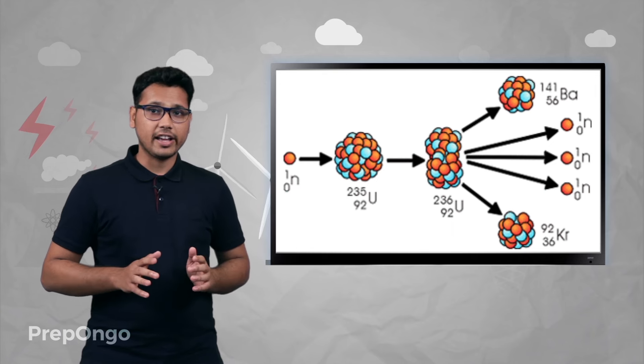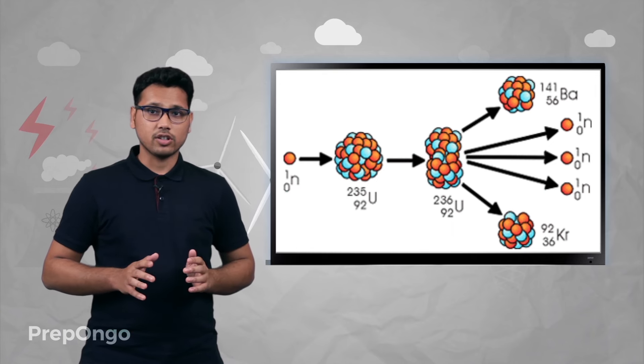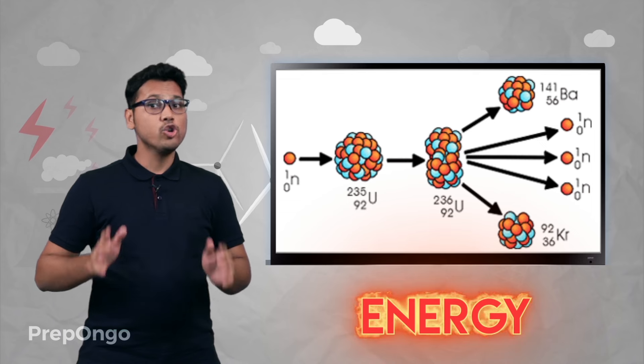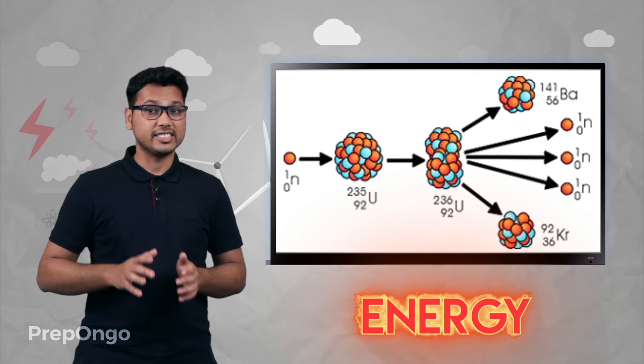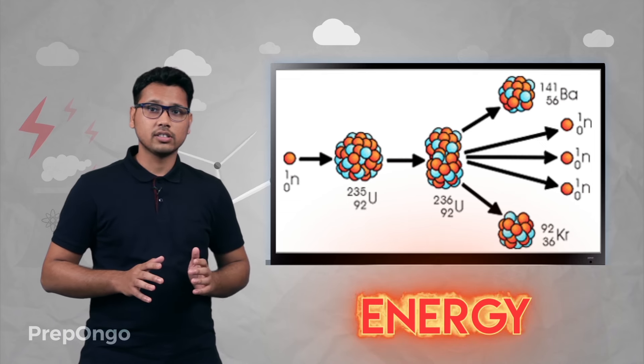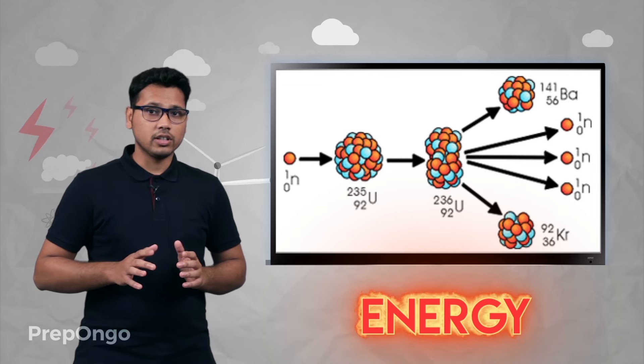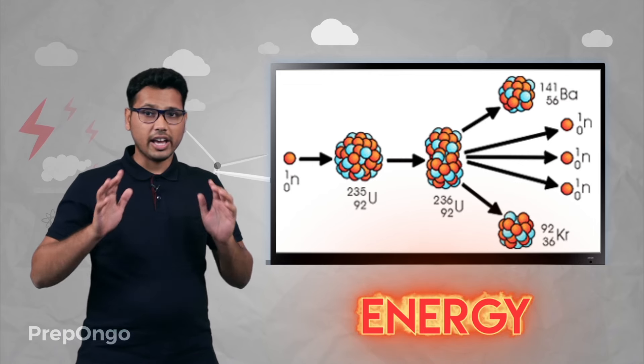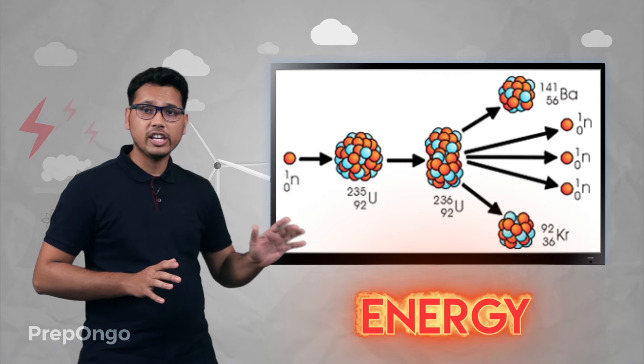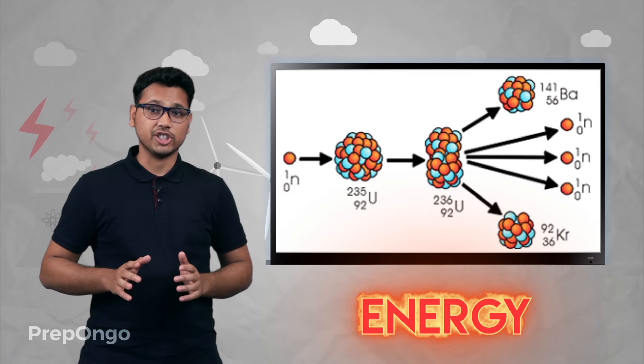Now these two nuclei are stable in nature and a huge amount of energy is released in this process. Since this process involved the breaking of a heavy nucleus into two nuclei, it is termed as nuclear fission.